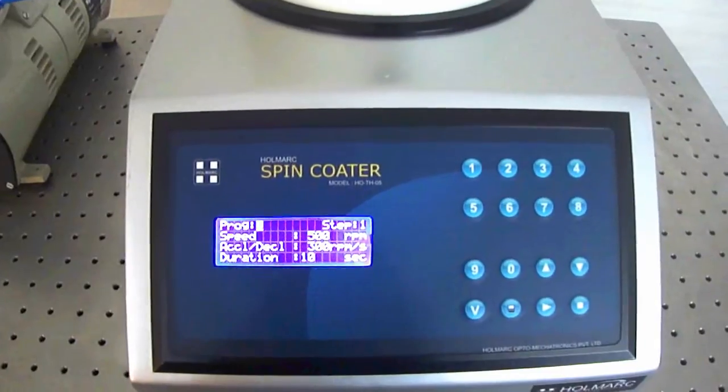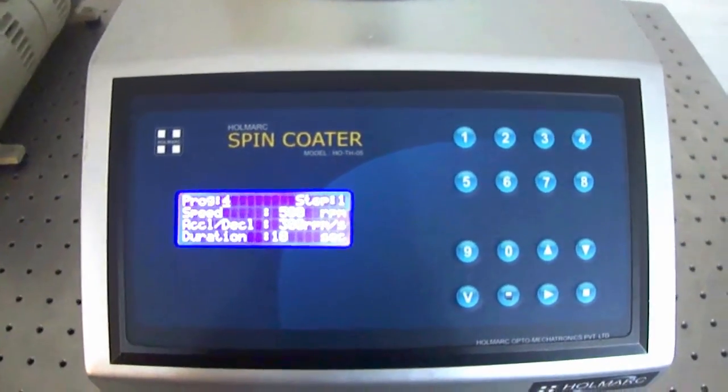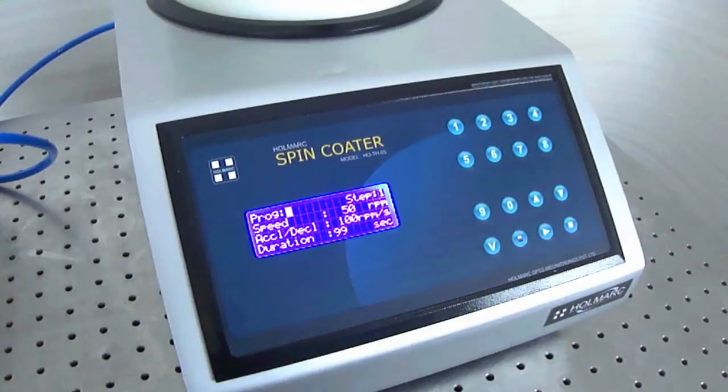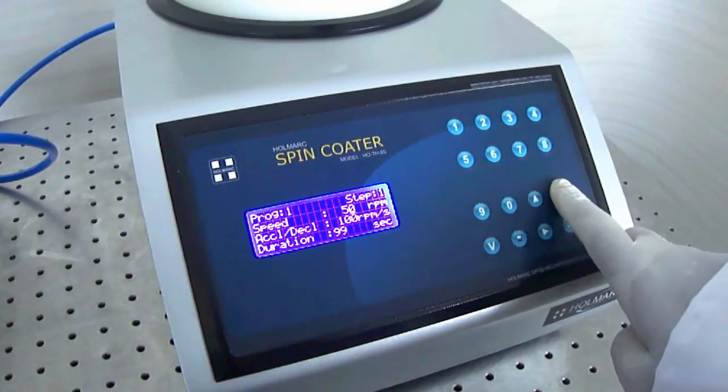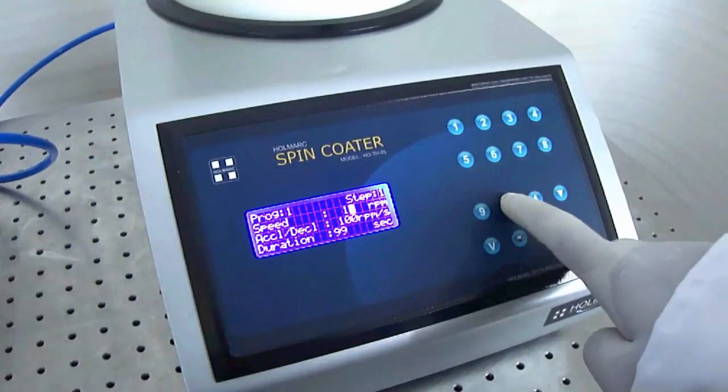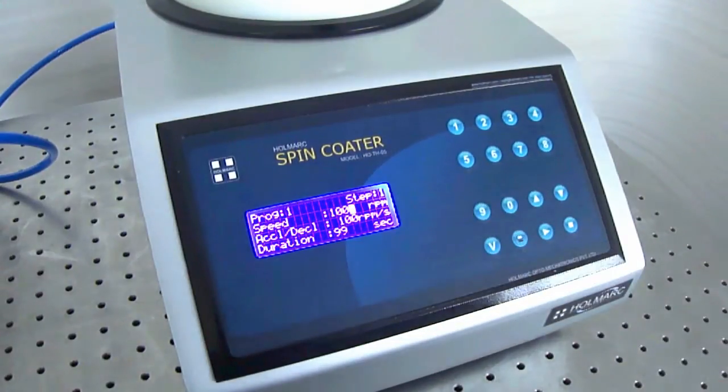The device has user-friendly keyboard and LCD display for programming various parameters. Spin duration, spin speed and acceleration can be easily programmed from the front panel keyboard.